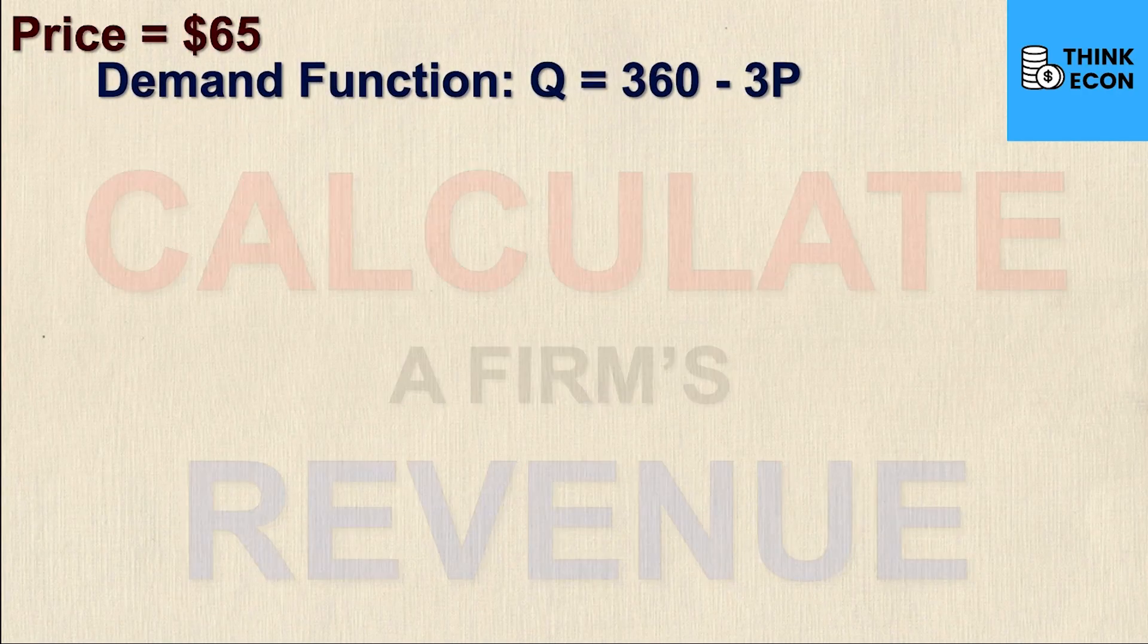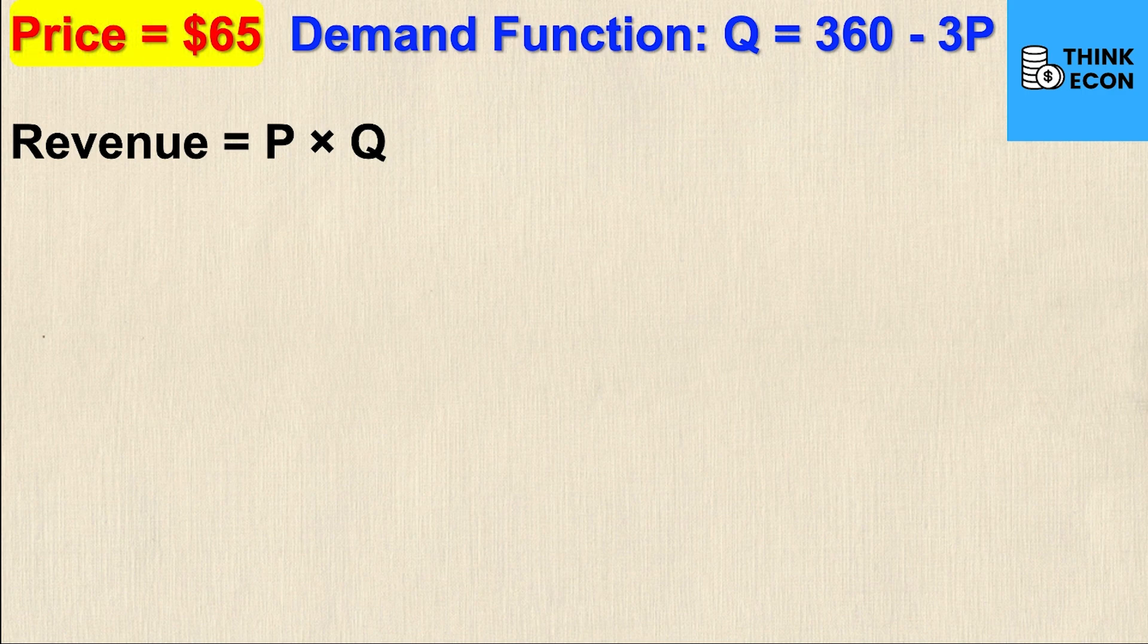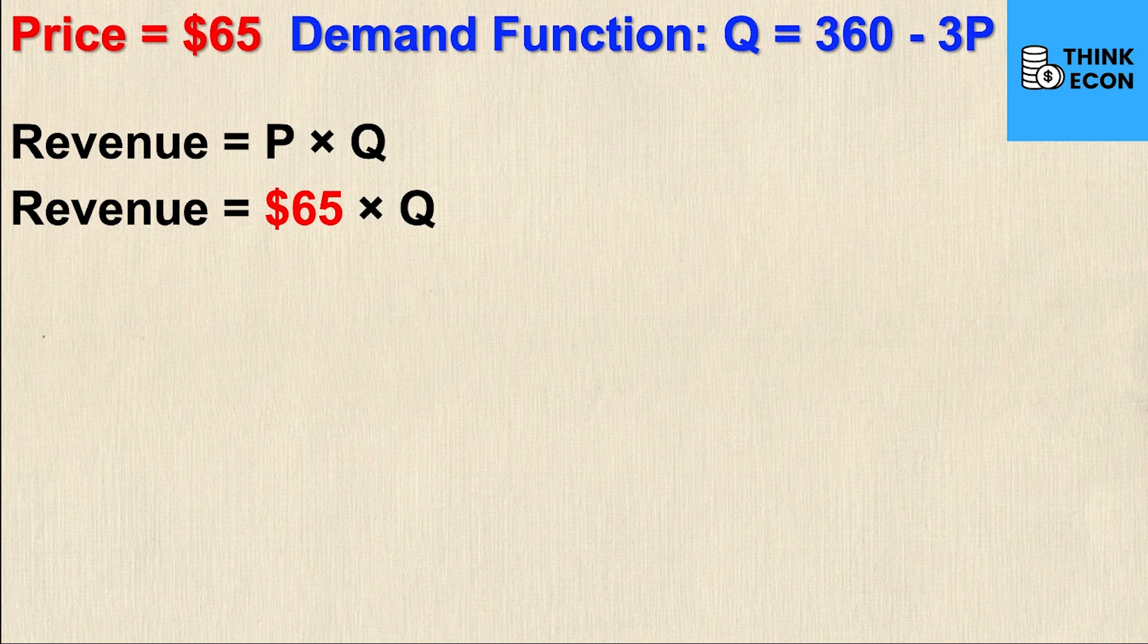So using just the price and the demand function we can calculate a firm's revenue. Remember the formula for the firm's revenue is simply price times quantity. Now we have the price given to us right here. The price is equal to $65 so I'm going to sub it in as revenue is equal to $65 times the quantity.